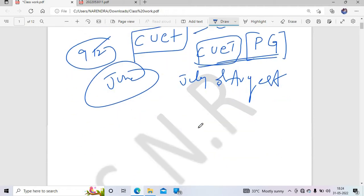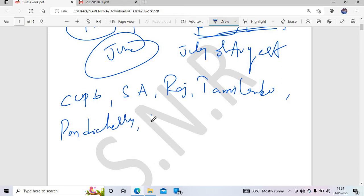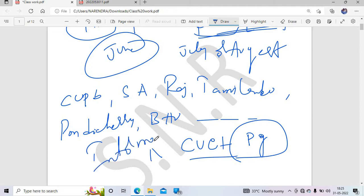The participating Central Universities include University of Punjab, South Bihar, Rajasthan, and Tamil Nadu. You will find the information bulletin where you can read about how many universities are participating and their requirements.